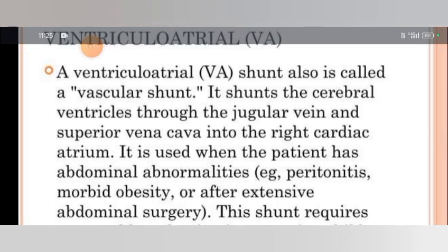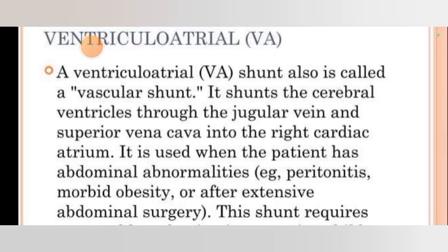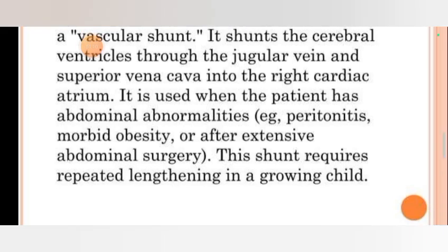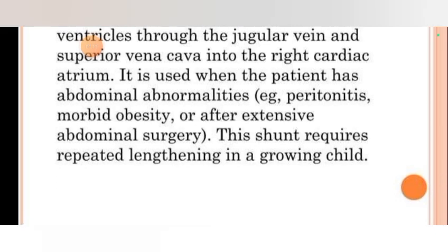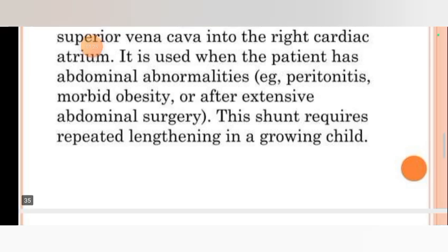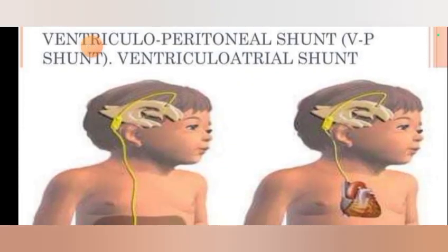A ventriculo-arterial shunt, also called a vascular shunt, shunts the cerebral ventricles through the jugular vein and superior vena cava into the right cardiac atrium. It is used when the patient has abdominal abnormalities such as peritonitis, morbid obesity, or after extensive abdominal surgery. This shunt requires repeated lengthening in a growing child.